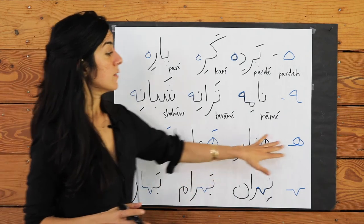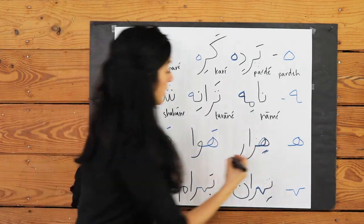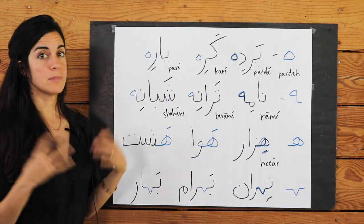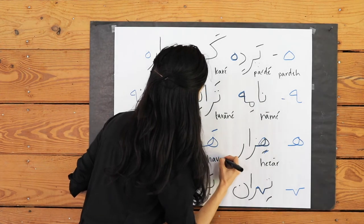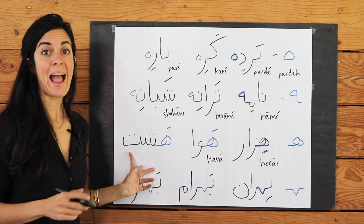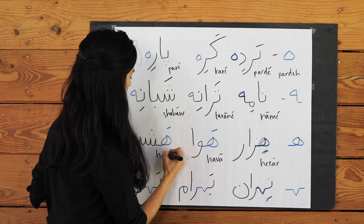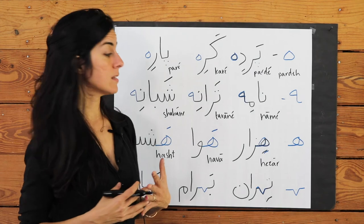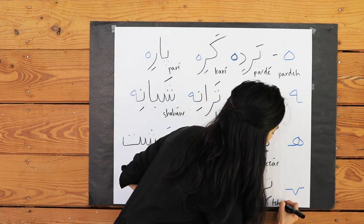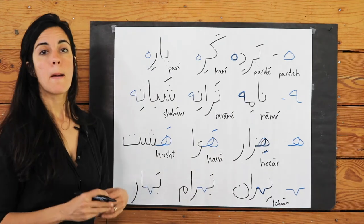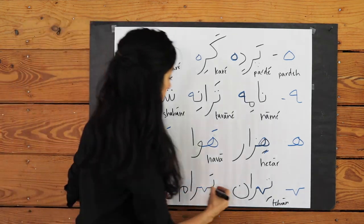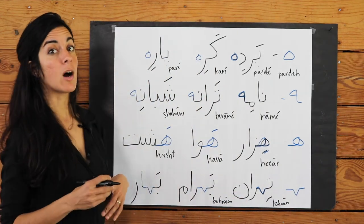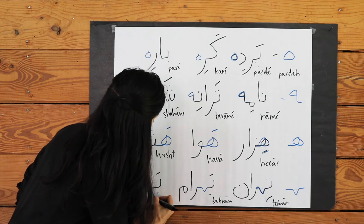Now let's look at all of them together. H at the beginning: Hezar means thousand, Hava means air. Hasht means eight. Tehran is the capital of Iran. Bahram is a man's name. And Bahar is spring.